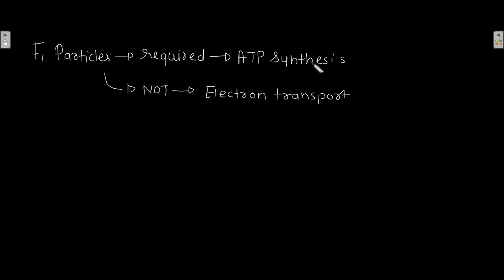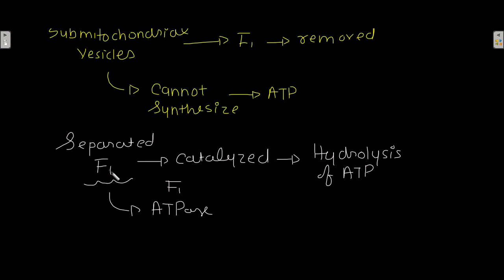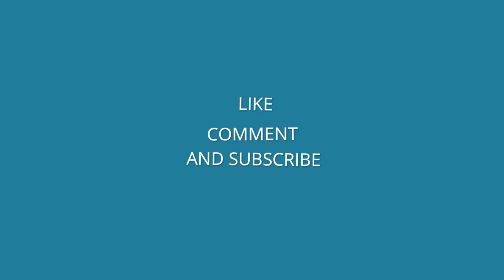F1 particles are required for ATP synthesis but not for electron transport. Sub-mitochondrial vesicles from which F1 has been removed by mechanical agitation cannot synthesize ATP. The separated F1, once isolated from the membrane, catalyzes the hydrolysis of ATP — and that is the reason F1 is known as F1 ATPase.